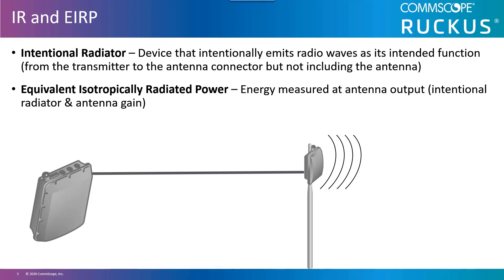The first of these terms is the intentional radiator. In a wireless LAN transmission system, this is the point at which the antenna is connected to the radio, or to the cable that leads to the radio. The RF signal from the transmitting radio may pass through connectors, cables, attenuators, amplifiers, and lightning arrestors before it even gets to the antenna. All of these components impact the signal before it arrives at the antenna. The combination of these things is the signal that you are intentionally trying to send.